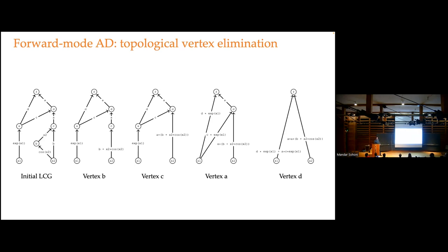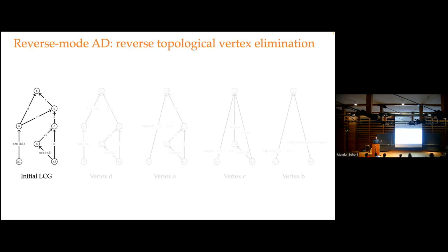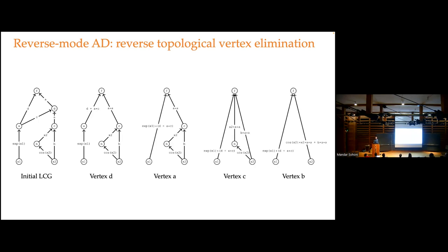What we do in autodiff is vertex elimination on the linearized computational graph. We eliminate a vertex by rolling its edges into adjacent edges, collapsing out that vertex in topological order. When we eliminate all vertices going from inputs to outputs, we get edges just between inputs and outputs — those are the Jacobian entries. Doing elimination from inputs to outputs gives us forward mode automatic differentiation. Doing it from outputs to inputs — walking backwards and eliminating vertices that way — gives us the algorithm we call backpropagation. Backpropagation can be understood as a dynamic program on the linearized computational graph. An annoying aspect: it requires storing all intermediate state during the forward pass in order to walk backwards.